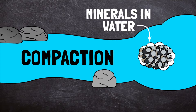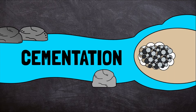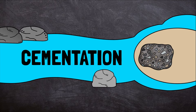Water fills the gaps between the small pieces of rock. This water has dissolved minerals in it. As the water evaporates, the minerals are left behind. They harden into a kind of cement, sort of like glue, which holds the sediment together.